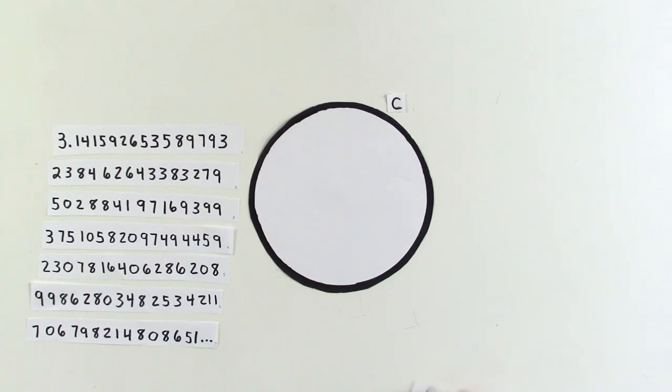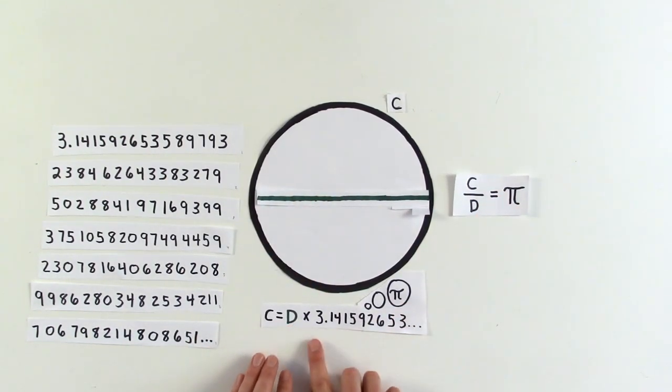Cause the ratio of circumference to diameter is pi. And any circle, whether tiny or an arc around the sky, which means to find that curving C, we can start by knowing D, then multiply by approximately 3.141592653.